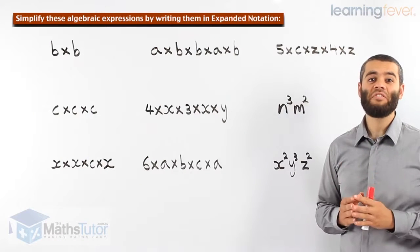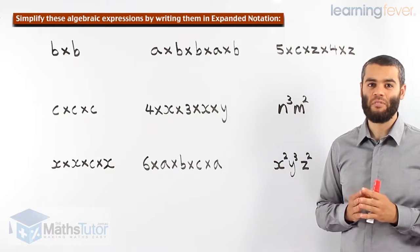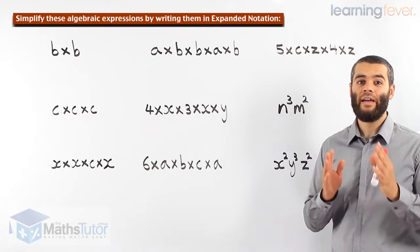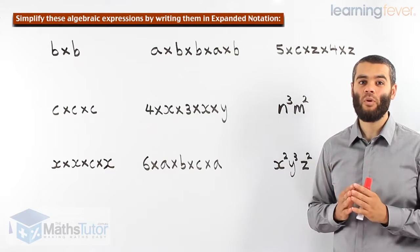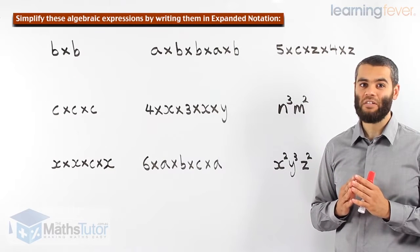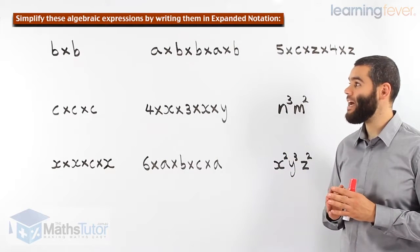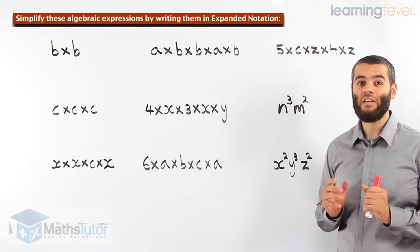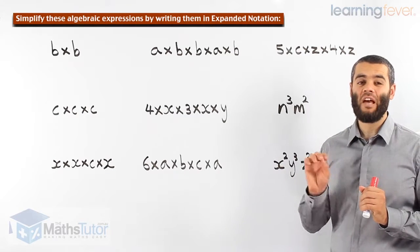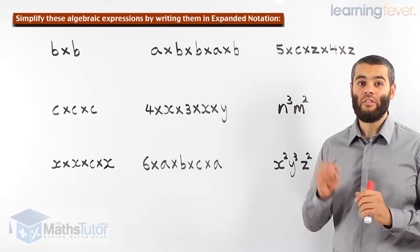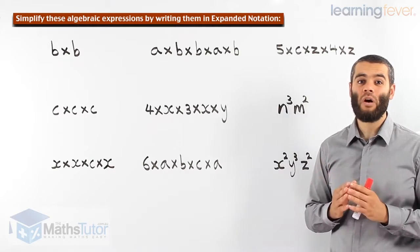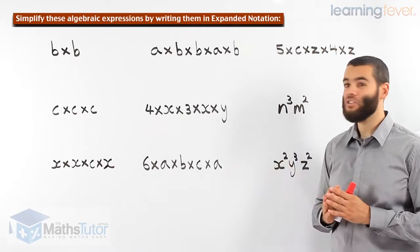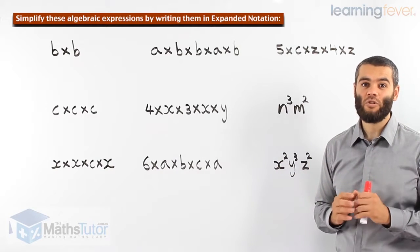Hey guys! Mathematicians like to make things simple — they don't like to complicate things at all. They like to simplify and make things easy, straight to the point, and smaller in writing. Now here we have algebraic expressions. Some of them are pretty long, but mathematicians like to take shortcuts. There are shortcuts and there is what we call index notation — writing these algebraic expressions in a much simpler and shorter manner.